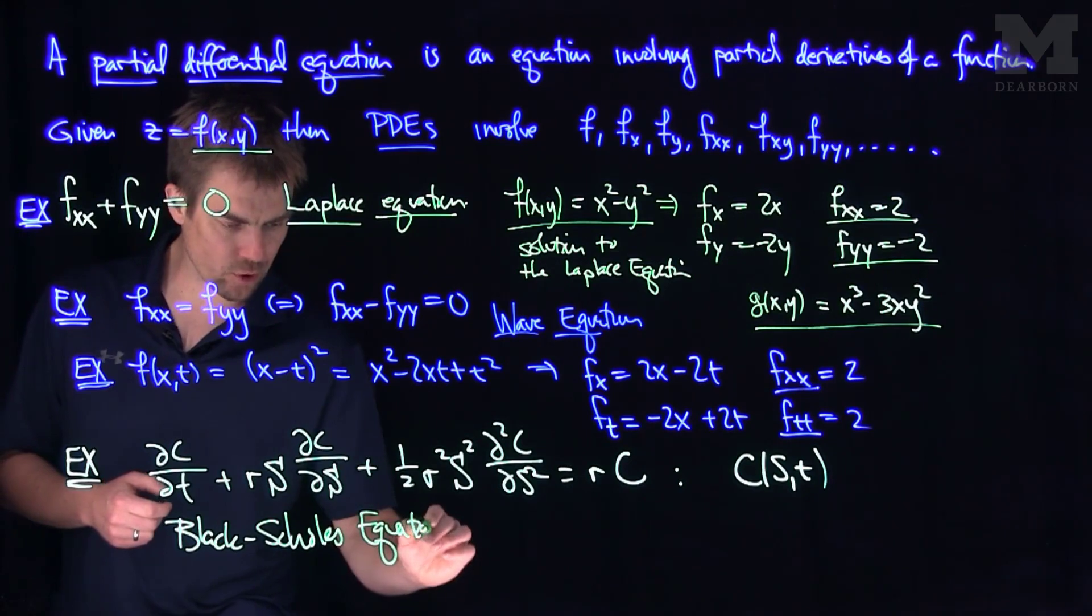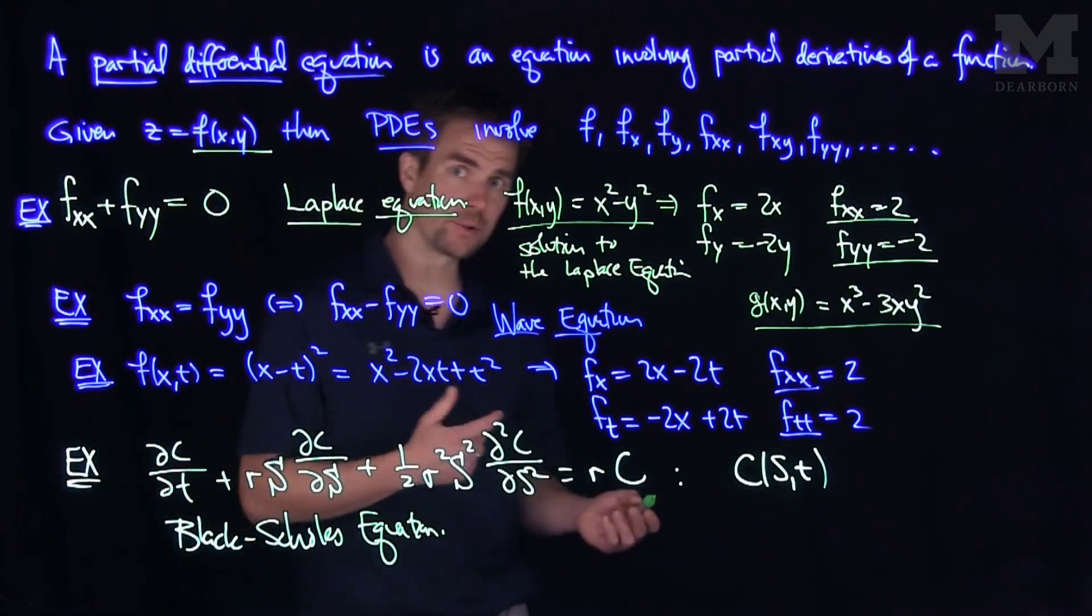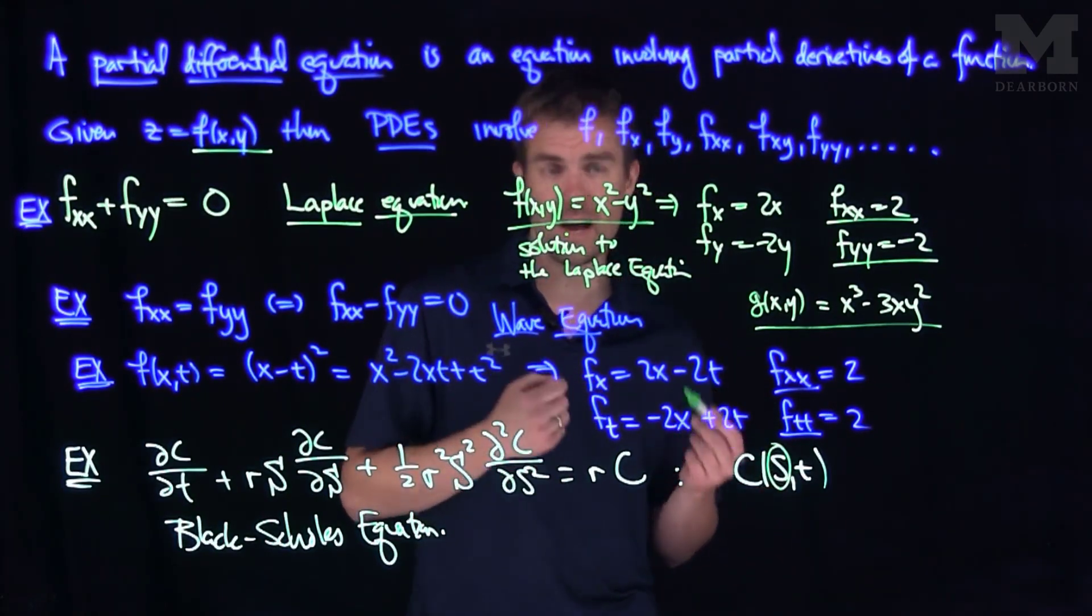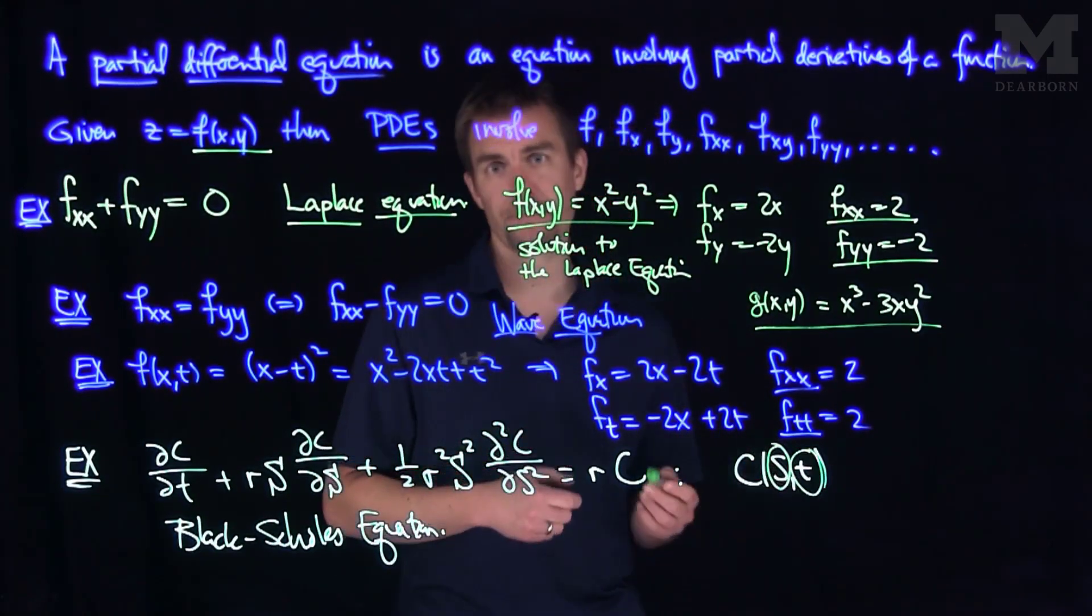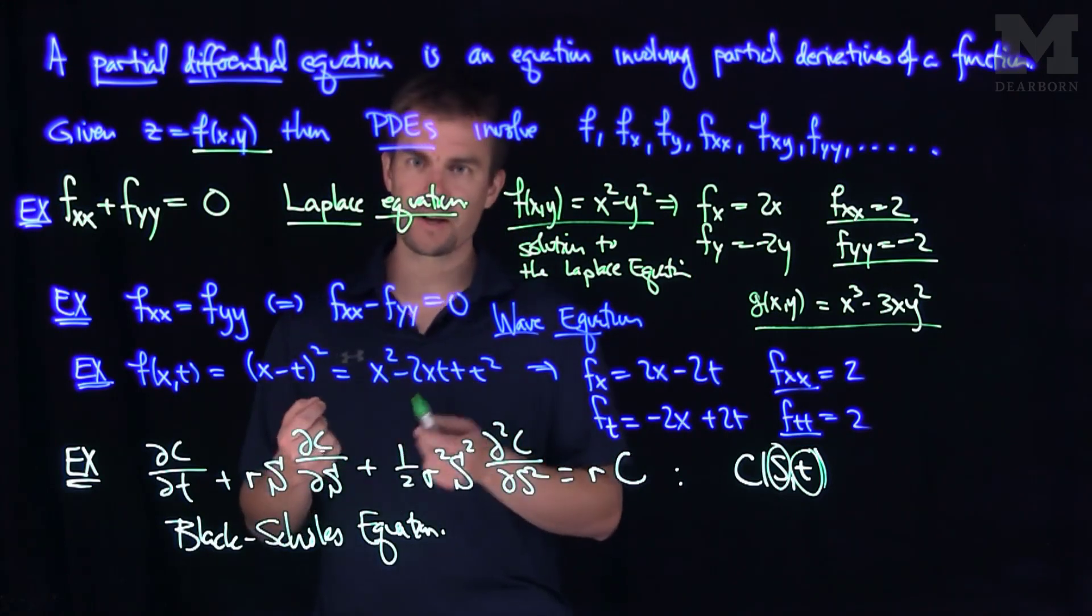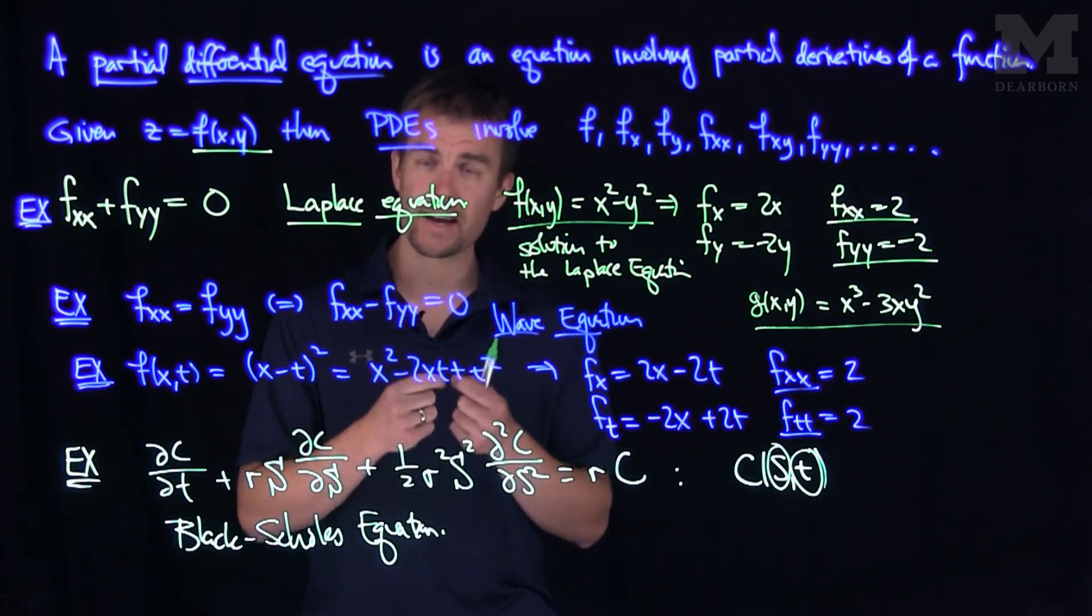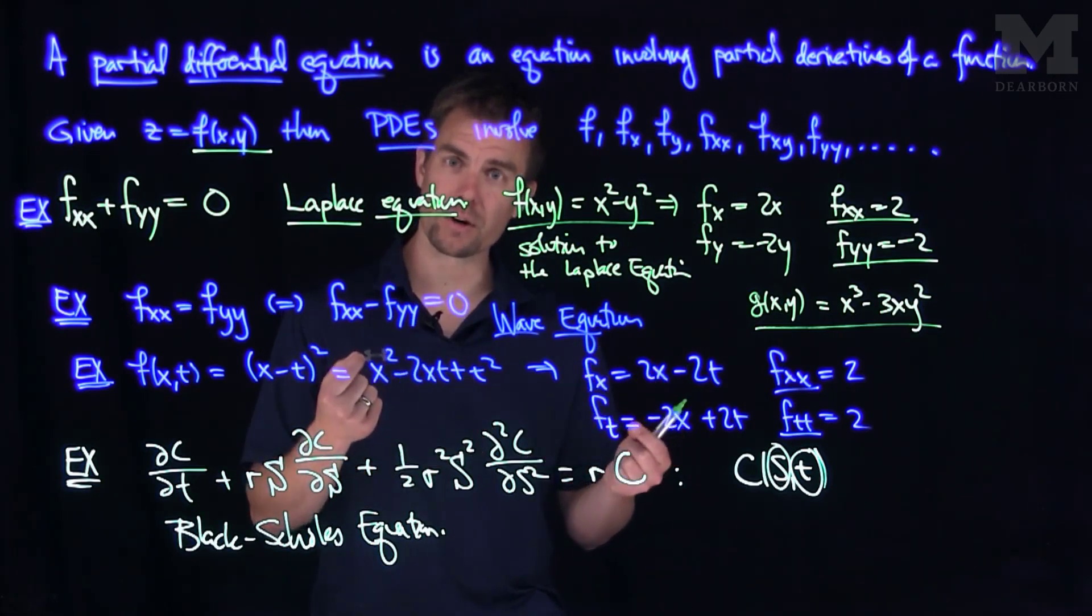What the Black-Scholes equation tells you is it tells you the price of a call option that depends on an underlying stock price s at time t. In finance, a call option is a financial instrument which gives you the right to buy a stock at a certain price in the future. And you do not have to exercise this option.